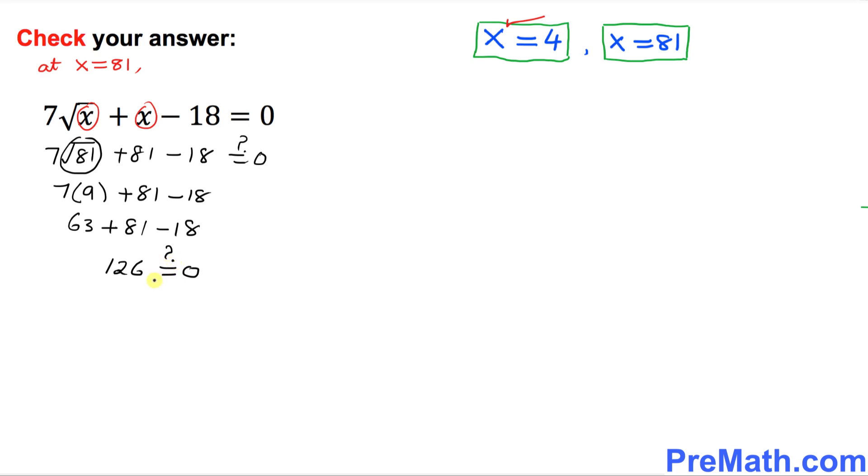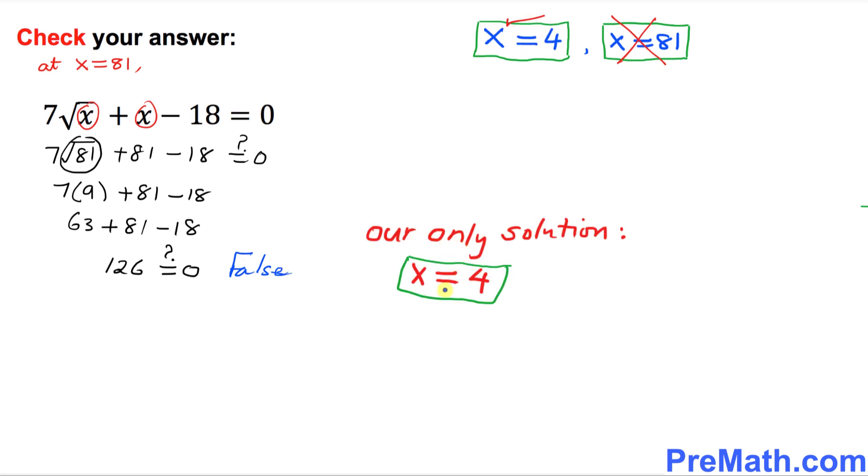My question is, is the left hand side equal to right hand side? No, that is not true. That is false. So that means this x equal to 81 is not a good answer. So our good answer is only x equal to 4. So that's our only solution turns out to be x equal to 4.